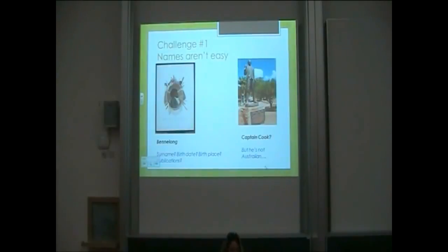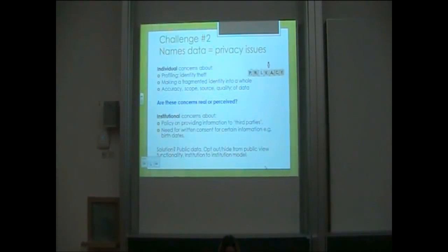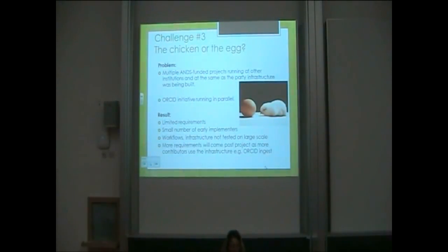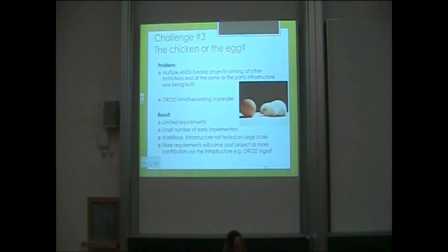The project faced some challenges. Challenge one: names aren't easy. For example, an Indigenous Australian with no surname, no birth date, or no publications. And should Captain Cook — who isn't Australian — be in an Australian service? I would say yes; we sort of claim him as our own. Challenge two: names data raises privacy issues. Individuals have concerns, particularly about making their fragmented identity into a whole — blogging here, writing an article there, not wanting it all together in one interface. Most institutions can't provide birth dates to the party infrastructure, but there is an opt-out option if people are worried about privacy. There was also a chicken-and-egg problem, with a number of projects running in parallel — including the ORCID project and a number of ANDS projects — which means that not all requirements came through up front; they're actually coming through as people really start using the infrastructure and testing workflows at large scale.